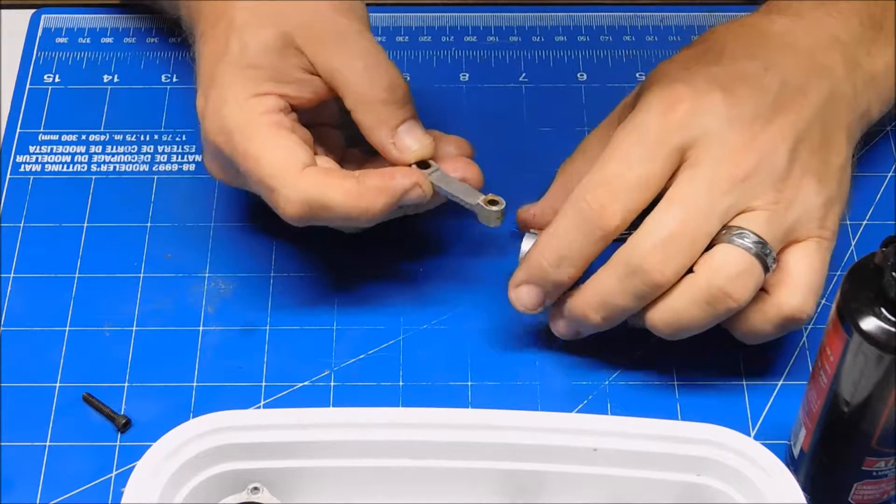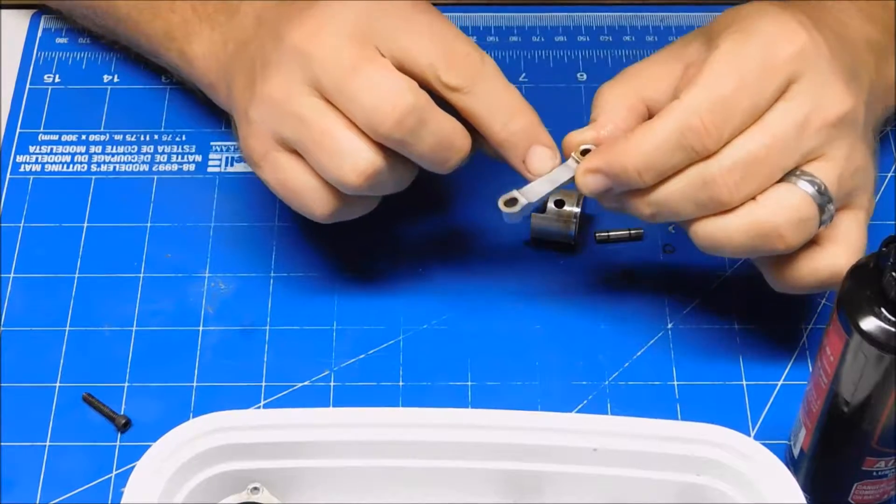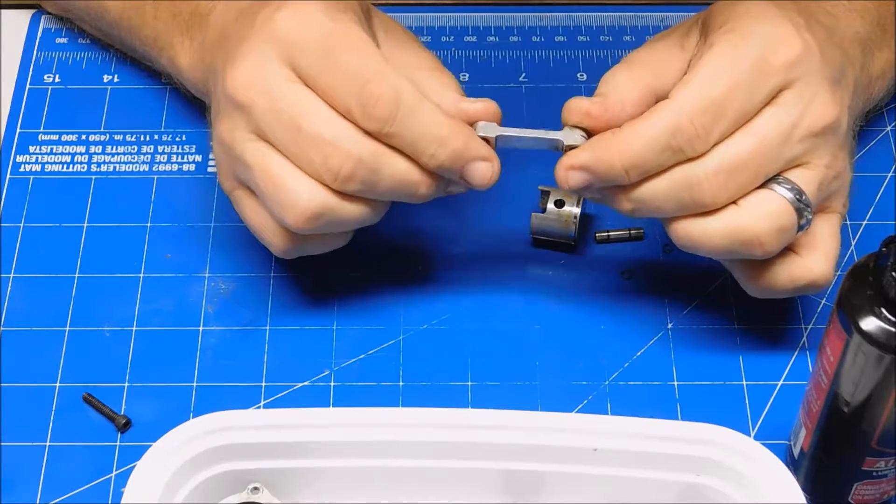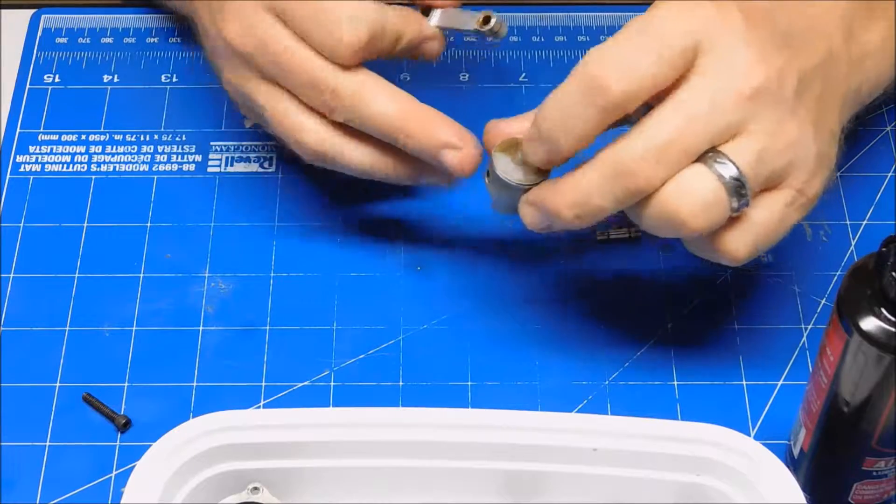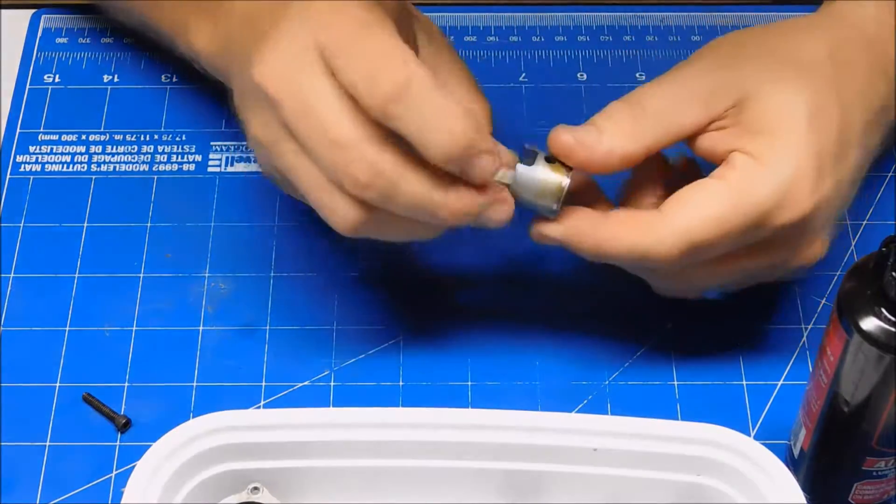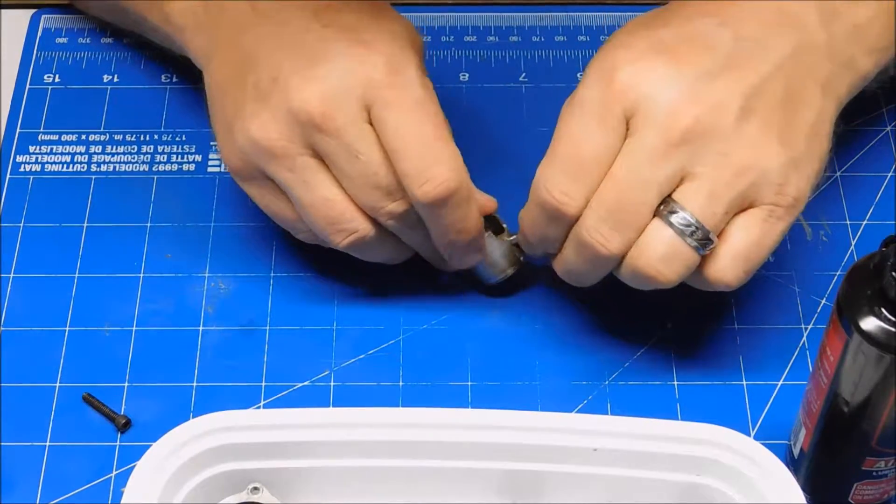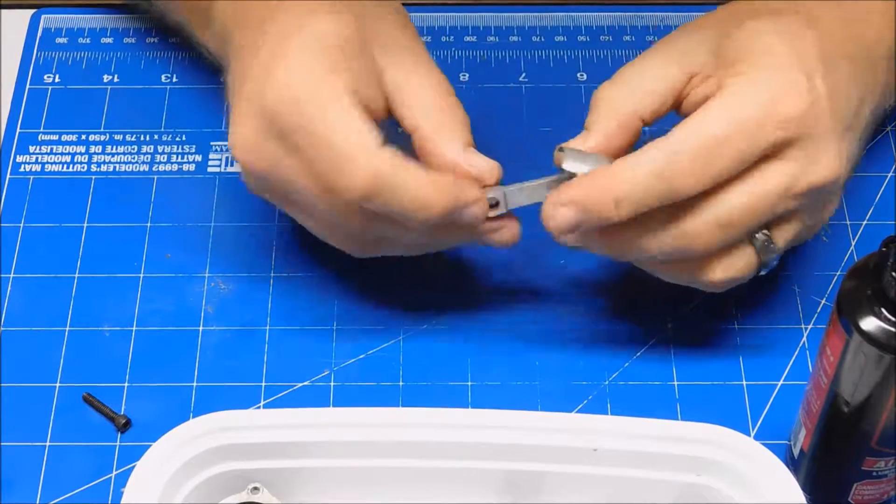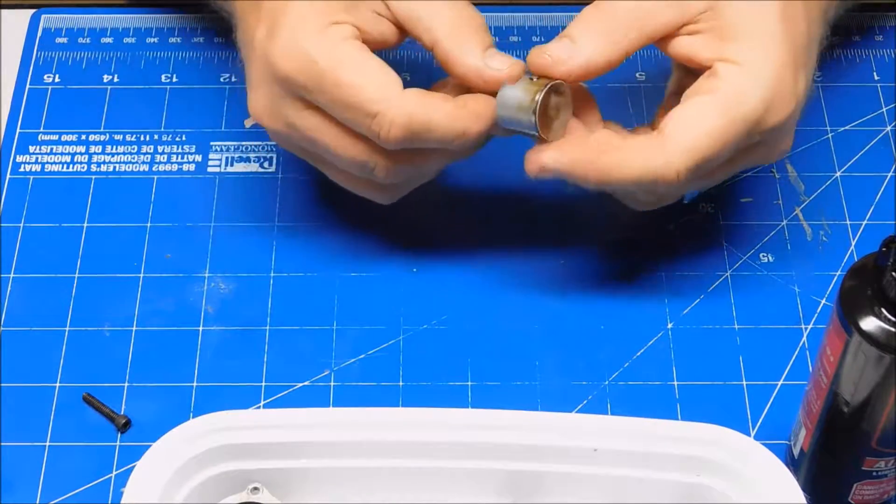Now it looks like somebody's had this engine apart before because it looks like there's a B kind of scribed on the connecting rod to indicate the back of the engine. And I know that this piston has an arrow on the top of it pointing towards the exhaust. So let's hope that inscription there is correct, because there is a slight difference in the cutout here.